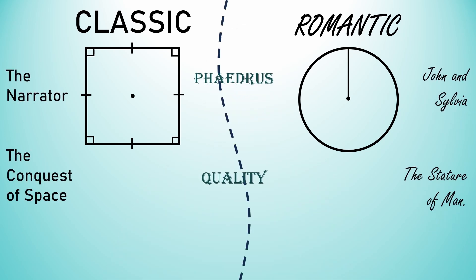So how then do we square the circle? Phaedrus claimed that quality was something that you could just see and that it was prior to anything classic or romantic and could not be captured therefore by the church of reason.